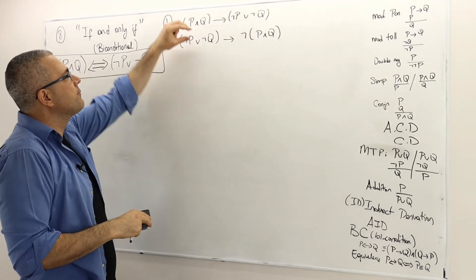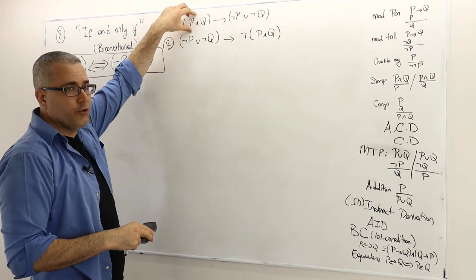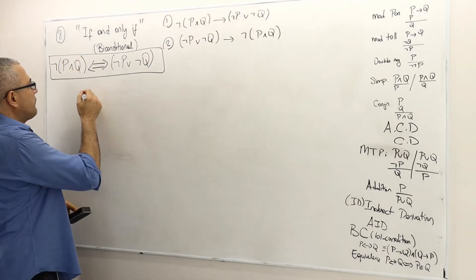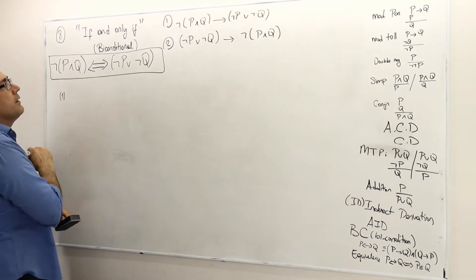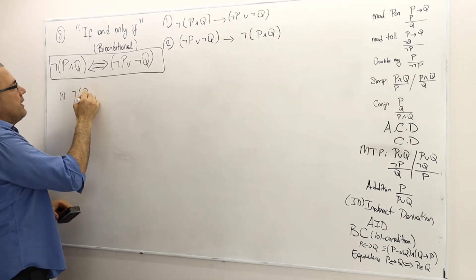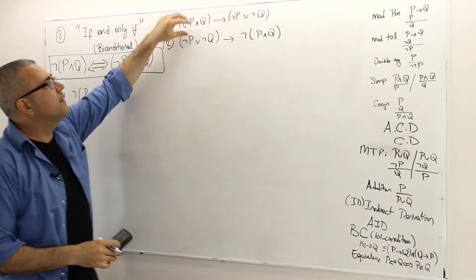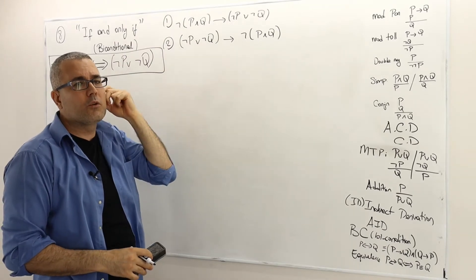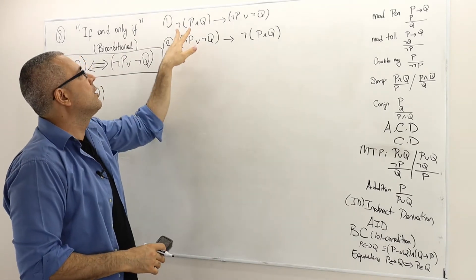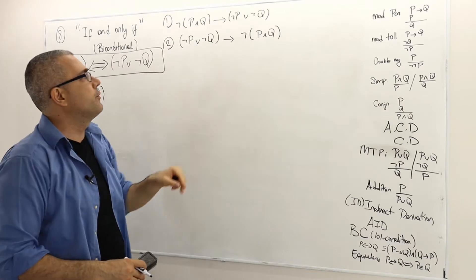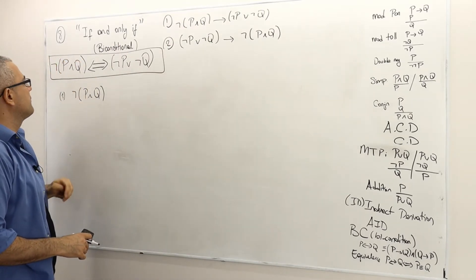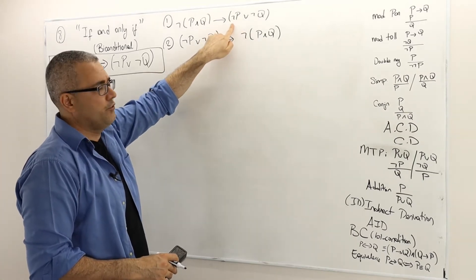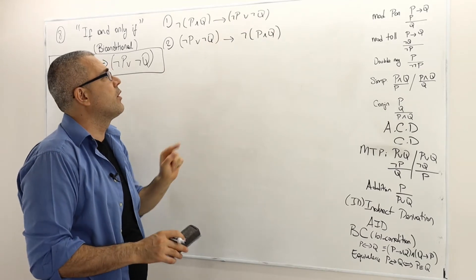To prove a conditional, we assume the antecedent is true and show the consequent must be true as well. If the antecedent is false, the entire conditional statement is true anyway, so we don't worry about that case. My first assumption is not P and Q. Once this is true, I need to prove that either not P is true or not Q is true.